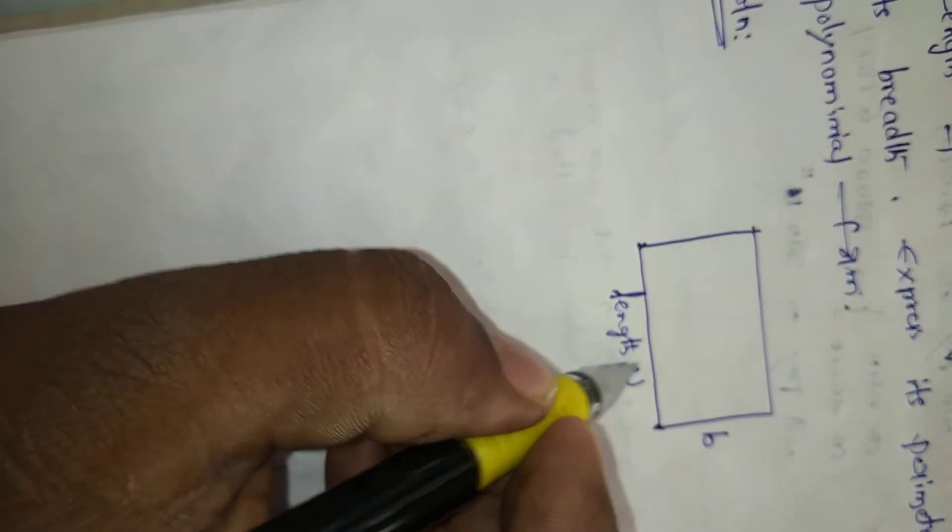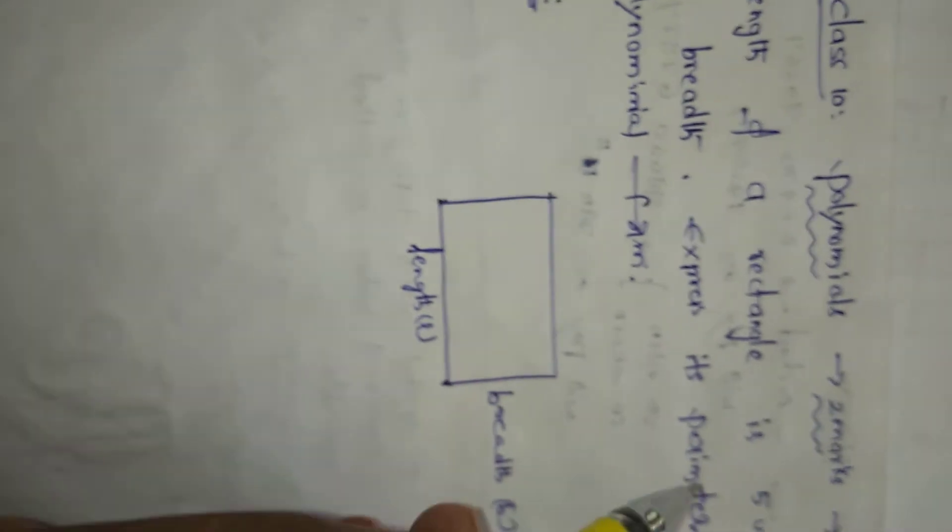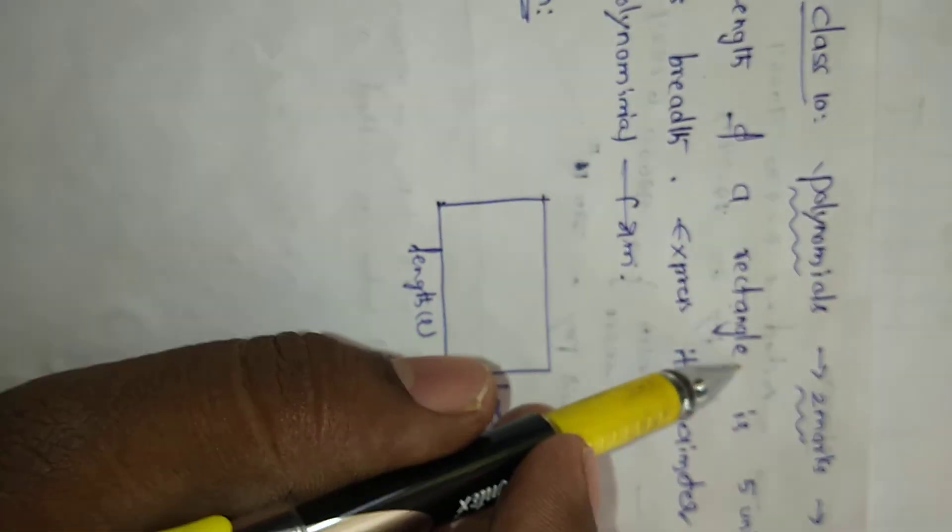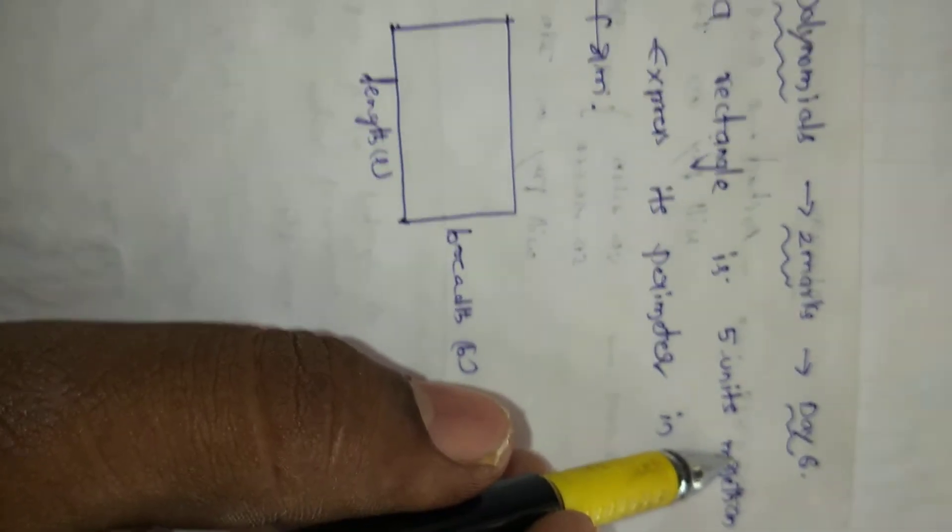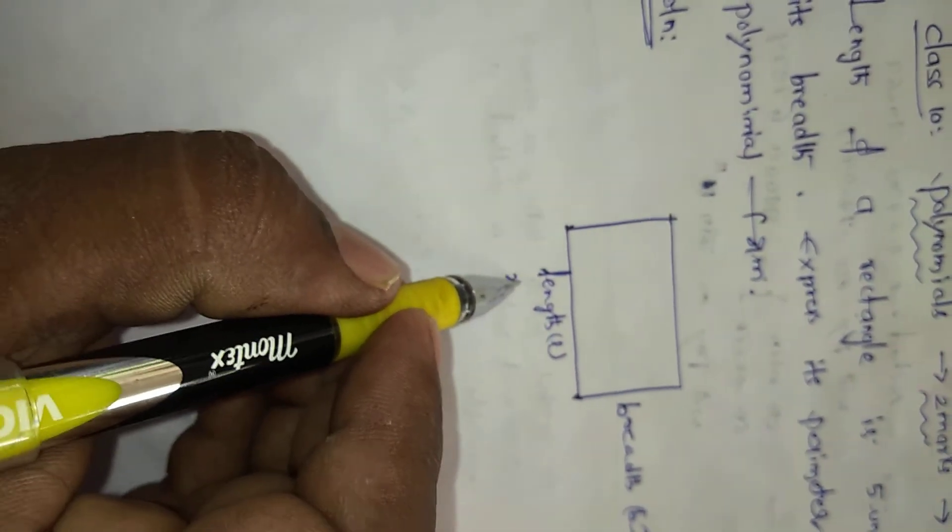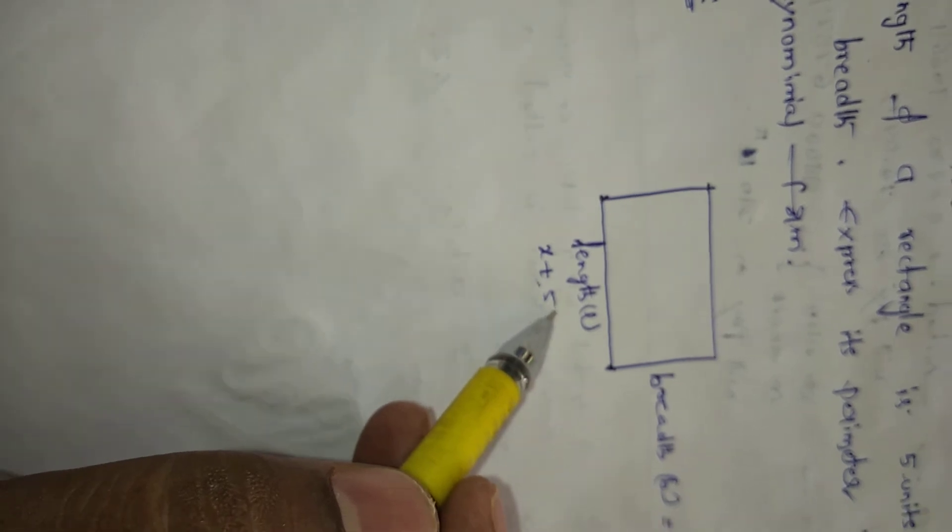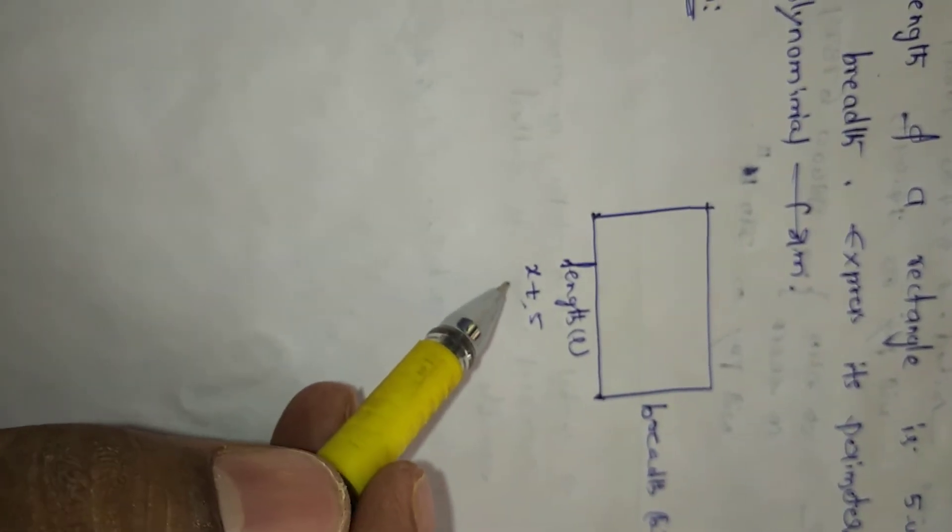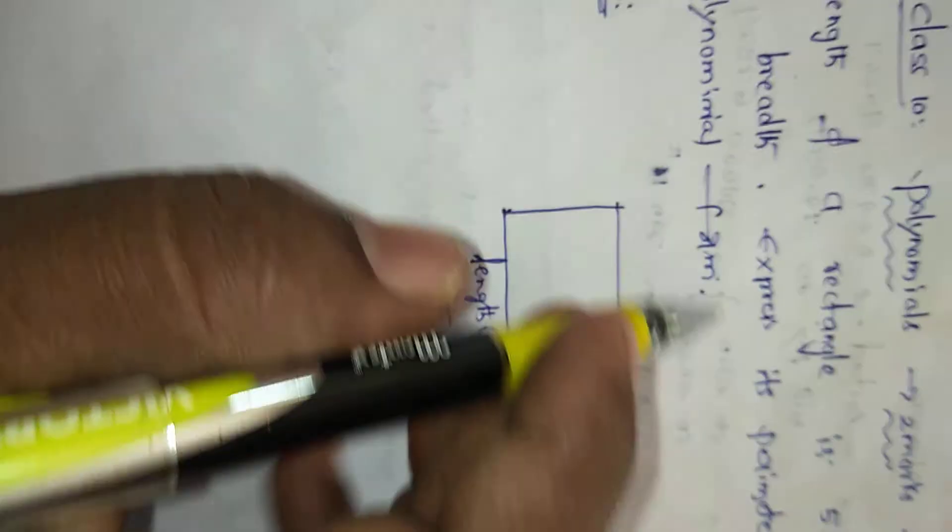Length denotes L, breadth denotes B. Here in the question, length of a rectangle is 5 units more than its breadth. We don't know the breadth. If we take the breadth x, the length becomes x plus 5. x is breadth, 5 more than its breadth, which is called length. We got express its perimeter in polynomial form.